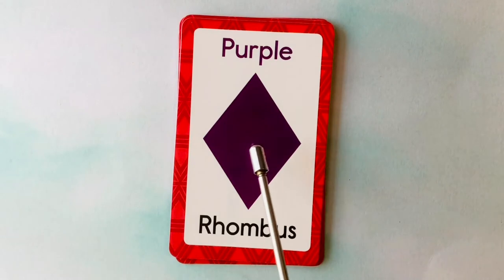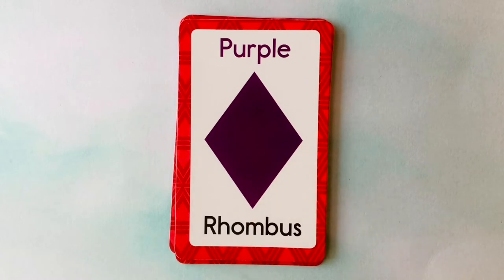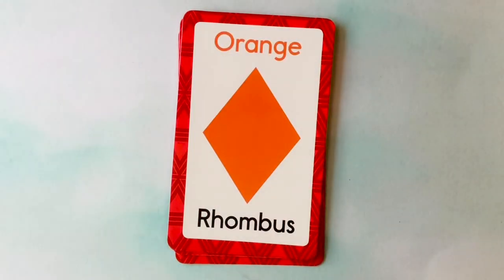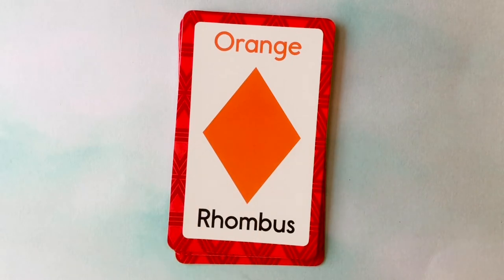This is a rhombus. What color is this rhombus? It's a purple rhombus. This is also a rhombus. What color is this rhombus? It's an orange rhombus.